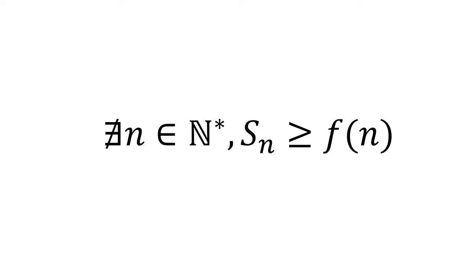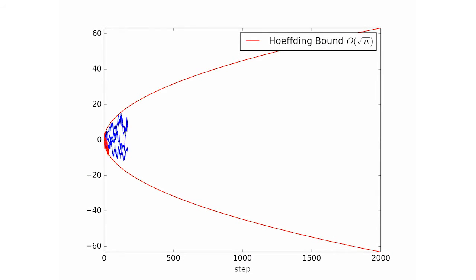For any bound that scales asymptotically at square root of n, it can be shown that threshold crossing is almost sure to occur sooner or later, even though it is unlikely to occur at any fixed moment.